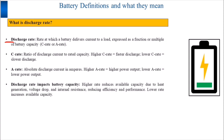How is discharge rate typically expressed? Discharge rate is usually expressed as a fraction or a multiple of the battery capacity, using terms like C rates or A rates.